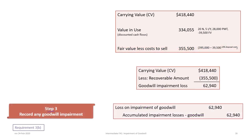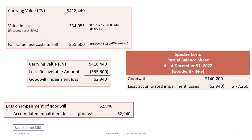The journal entry under IFRS is the same format as ASPE: debit loss on impairment of goodwill for $62,940 and credit accumulated impairment losses for goodwill for $62,940. On the balance sheet, goodwill has an original value of $140,200, less accumulated impairment losses of $62,940, leaving a carrying value of goodwill of $77,260.